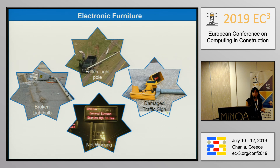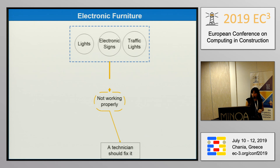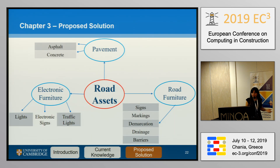The same approach applies to electronic furniture, where defects include broken light bulbs or electronic message signs that don't work. This is the broad category of defects — that they don't work. The first line is electronic signs, then the defects, and as one Highway England inspector told me, you can simply say they don't work properly. The maintenance technique is that a technician should fix it. So this is the proposed solution: pavement categorized into asphalt and concrete, electronic furniture into lights, electronic signs, and traffic lights.